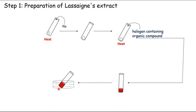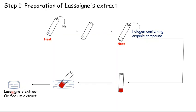We then immerse the fusion tube in a china dish containing distilled water, break it, heat it, and filter it. We collect the filtrate, which is our Lassaigne's extract or sodium extract.